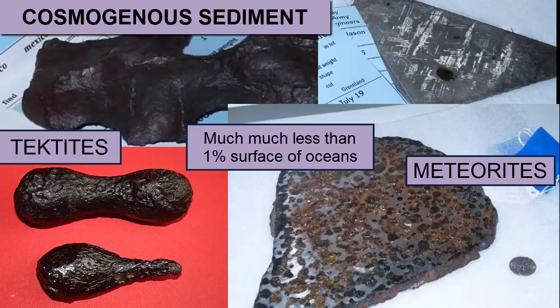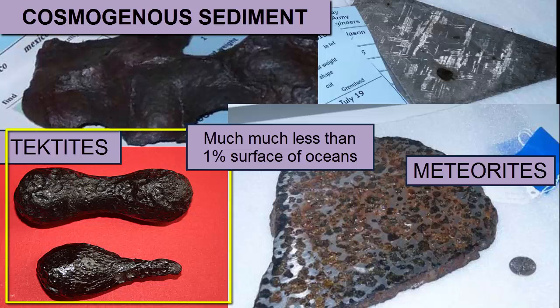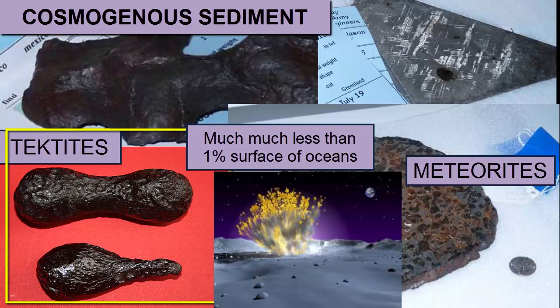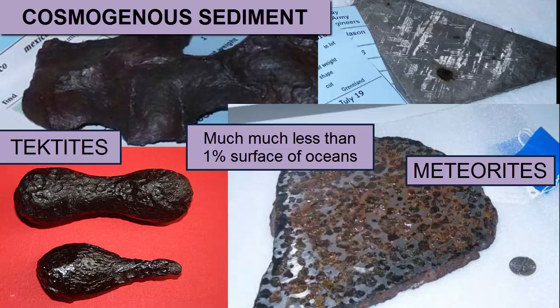The most uncommon sediment found in the ocean, but still found in abundances greater than on land, is cosmogenous sediment — meteorites that fall from space, and tektites, which are bits of Earth's crust ejected into space after a meteorite impact excavates a crater. This ejected crustal material melts as it exits the atmosphere and solidifies as it falls back down, producing a spherical teardrop-shaped glass nodule with eroded pits created by its journey back through the atmosphere. These are found in greater abundance in the ocean simply because of the slow sedimentation rate — where sediment collects at rates as low as 1 cm per 1,000 years, it's easier to find the tektites and meteorites that fall among them.